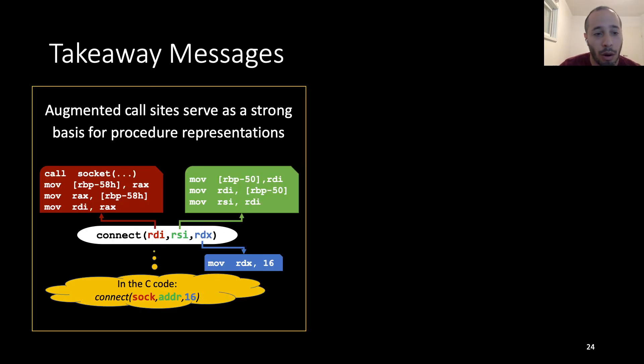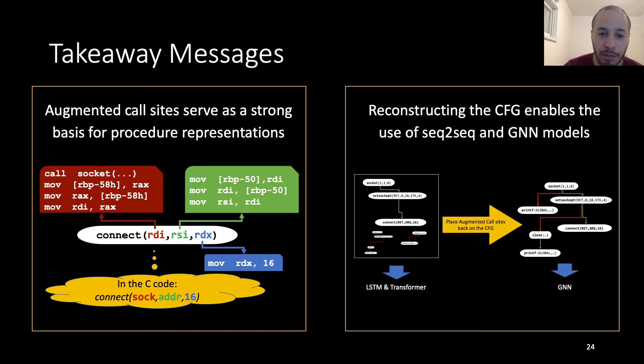That's it. I leave you with two takeaway messages. Augmented call sites serve as a strong basis for procedure representation, and that reconstructing the CFG enables the use of sequence-to-sequence and GNN modules. Generally, we recommend combining binary program analysis with machine learning to find a sweet spot and solve many different tasks. We really think that there is a lot of room for more work in this field. Also, check out our GitHub repository for more resources and information. Thank you very much.